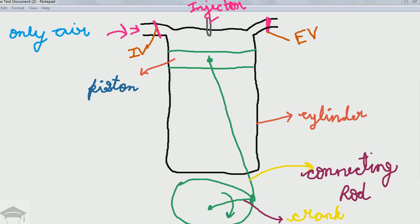Welcome to my channel. In this video I will be explaining the working of a diesel engine. This is the basic configuration — I have taken one cylinder just to explain. This is the intake valve, this is the exhaust valve, this is the injector through which the diesel is injected and sprayed inside the cylinder, this is the piston, this is the connecting rod, this is the crank, and this is the cylinder.